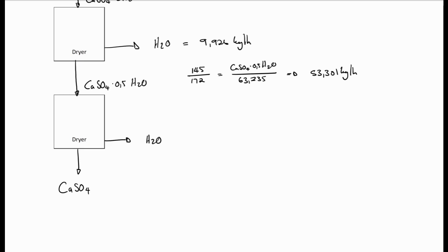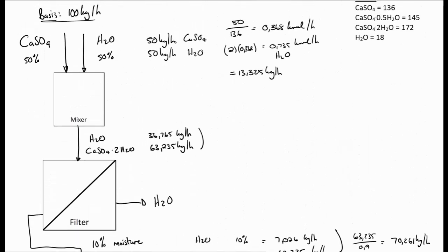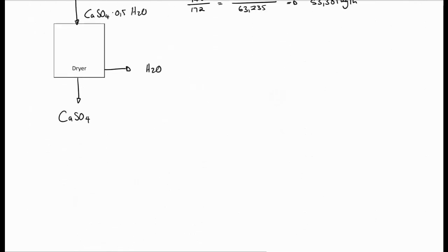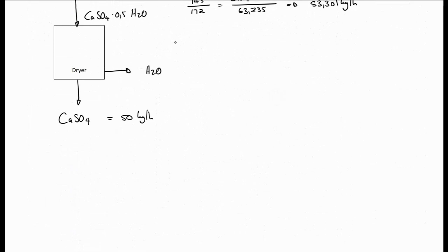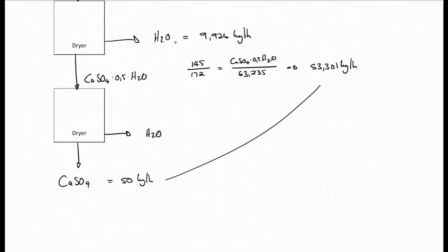Look at our problem. All the calcium sulfate going out was the calcium sulfate going in, and that was equal to 50 kilograms per hour. So we know that we're going to have 50 kilograms per hour calcium sulfate anhydrous leaving the system. How much water is leaving, and that will be the difference between these two, which will be equal to 3.309 kilograms per hour.